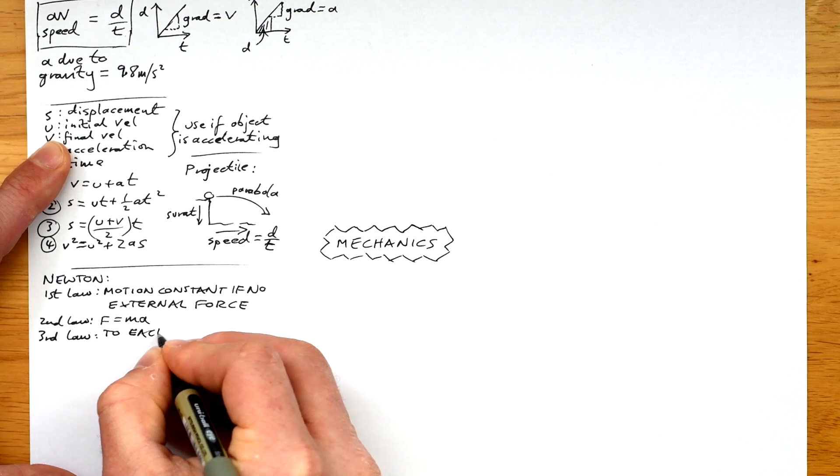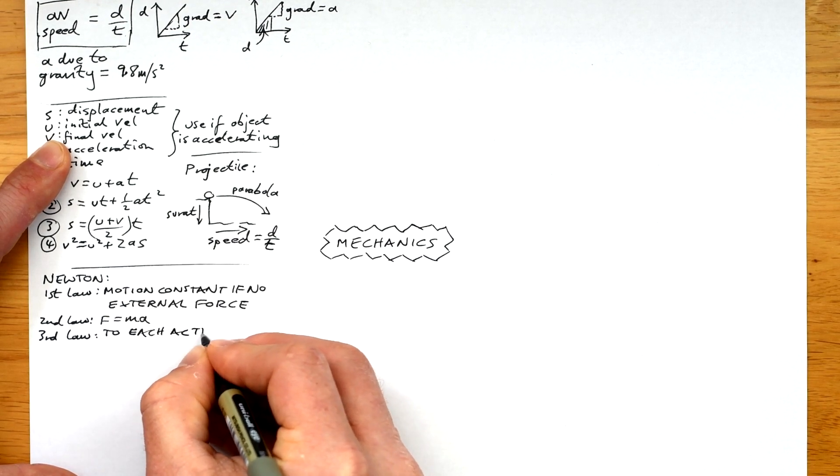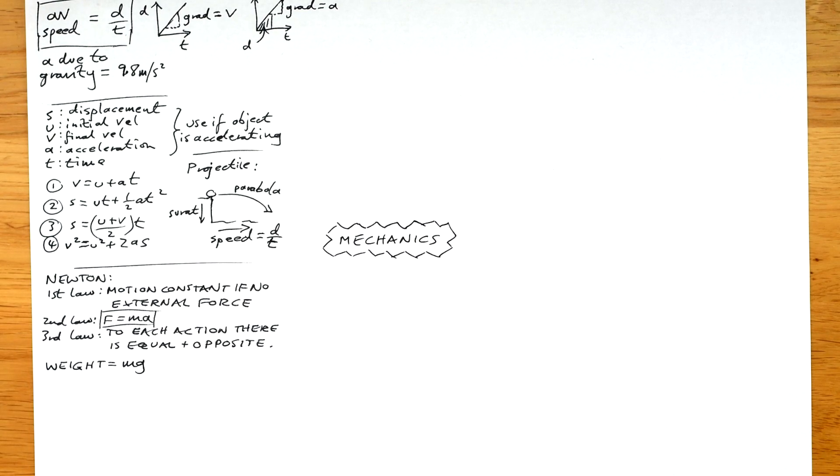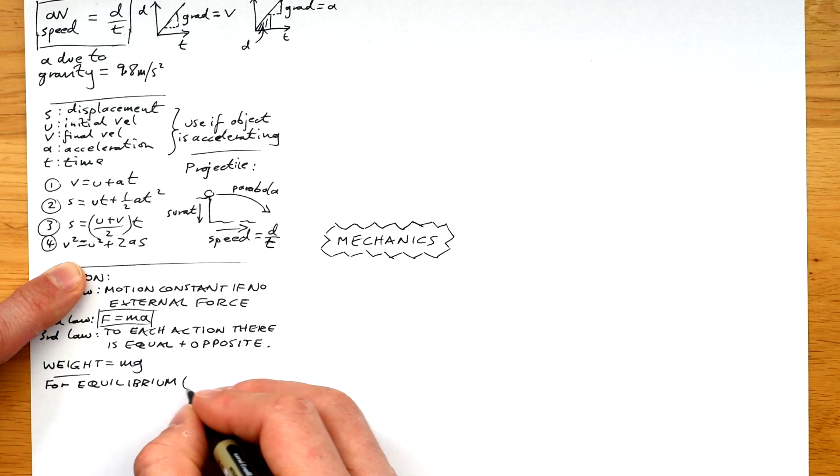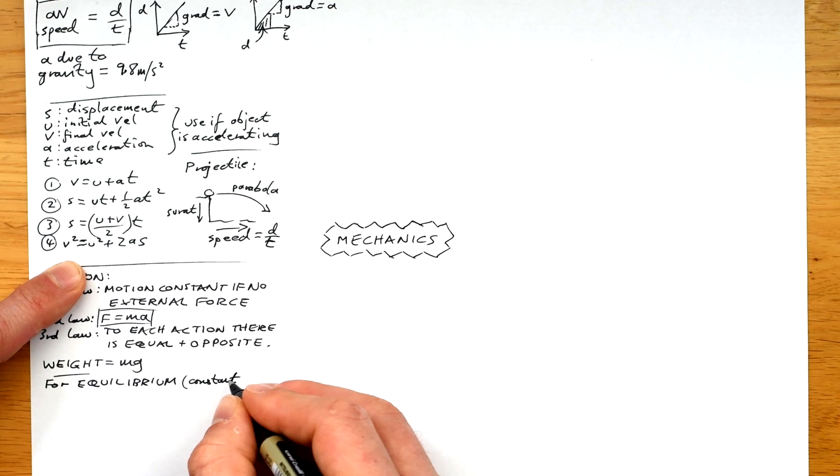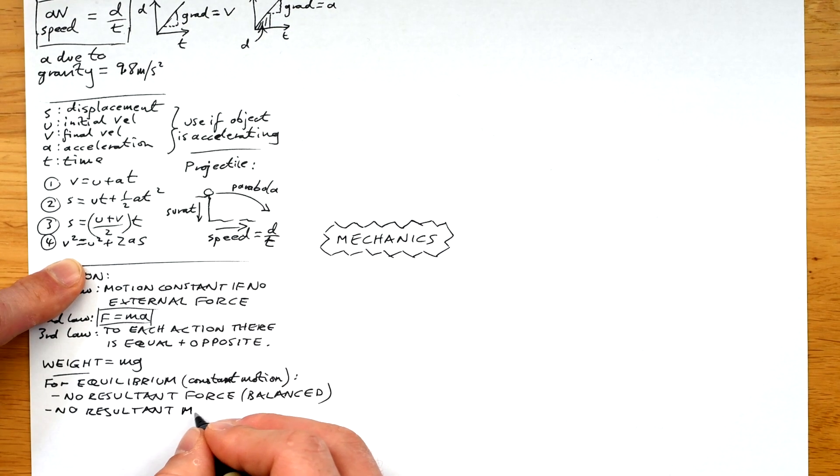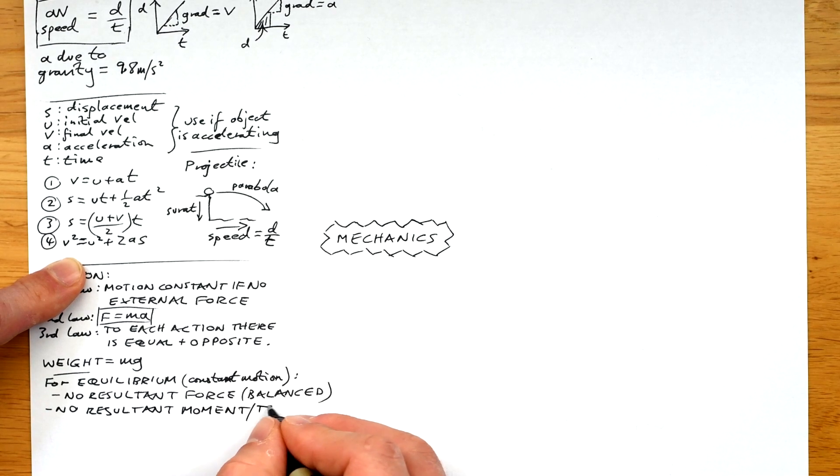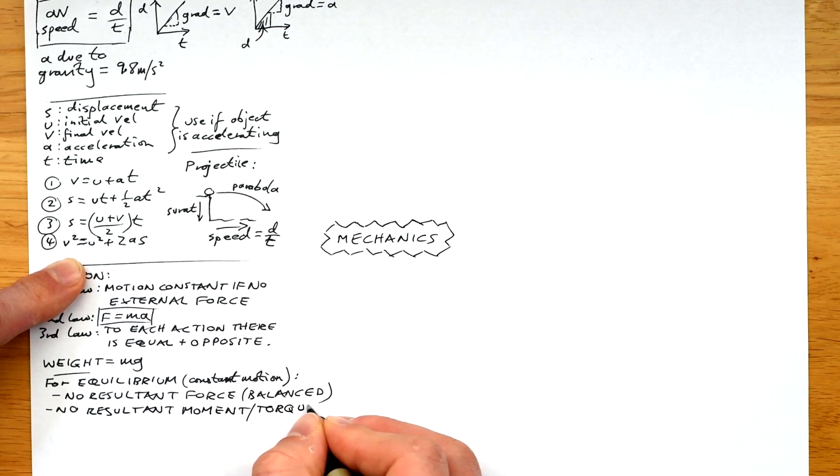Third law, to each action or force there is an equal and opposite reaction. Weight is equal to MG, that's mass times gravitational field strength, 9.8 or 9.81. For an object to be in equilibrium, that means constant motion, we're talking about Newton's first law there. We need no resultant force, that means that forces are balanced and also we have to have no resultant moment or torque. We'll talk about that a little bit later on as well.